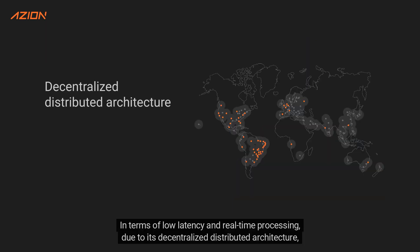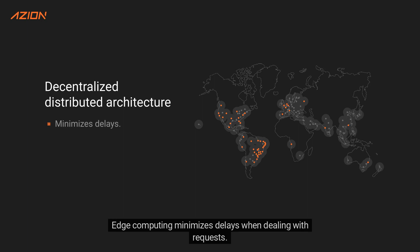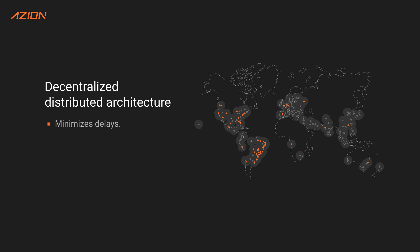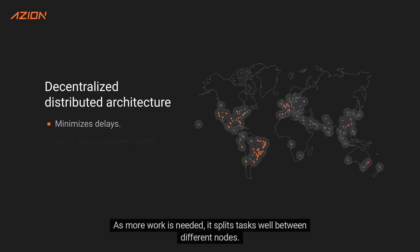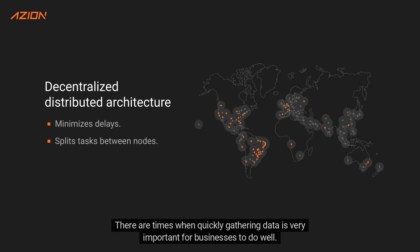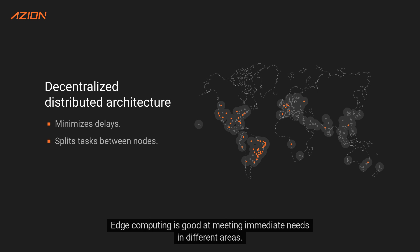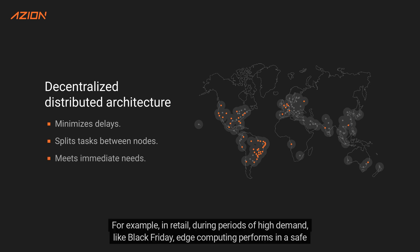In terms of low latency and real-time processing, due to its decentralized distributed architecture, edge computing minimizes delays when dealing with requests. As more work is needed, it splits tasks well between different nodes. There are times when quickly gathering data is very important for businesses. Edge computing is good at meeting immediate needs — for example, in retail during periods of high demand like Black Friday, edge computing performs in a safe and adaptable manner.